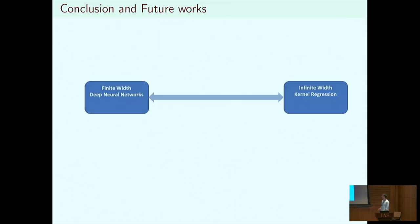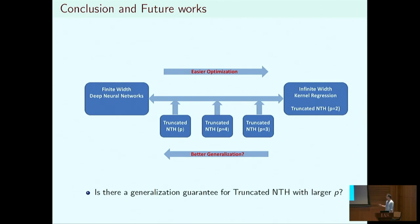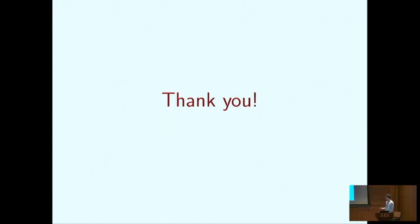To conclude: we have the finite width deep neural network and the infinite width one, which corresponds to kernel regression. We introduce a family of dynamics — the truncated neural tangent hierarchy — which interpolates between the finite width and infinite width regimes. Going toward the infinite width side, optimization is easier because kernel regression is convex; going toward the finite width side, we expect better generalization. An interesting open question is whether there is a generalization guarantee for the truncated neural tangent hierarchy, and whether it generalizes better when truncated at a larger level.